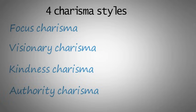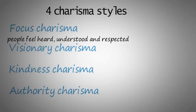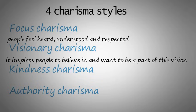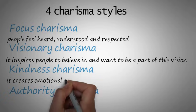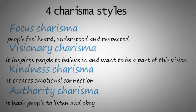Focus charisma is achieved primarily through presence and good listening and makes people feel heard, understood and respected. Visionary charisma requires bold vision that is delivered with complete conviction. It inspires people to believe and want to be a part of this vision. Kindness charisma primarily involves warmth and acceptance and creates emotional connection. Authority charisma is achieved through the projection of power and status and leads people to listen and obey.